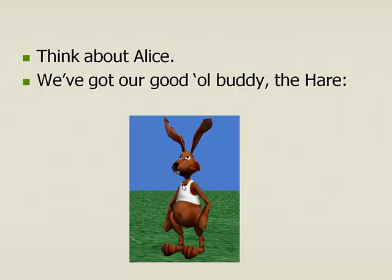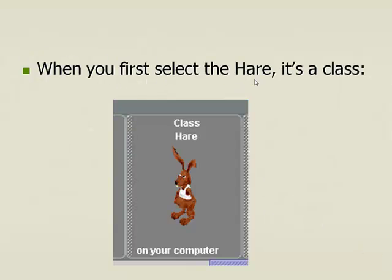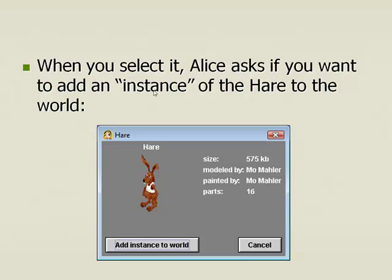Let's think about Alice, and our good old buddy the Hare from Alice. When you first select the Hare in Alice, it says Class — because this is the blueprint for the Hare. It's not an actual object of a Hare, it's the blueprint for the Hare. It's the class. When you select it, Alice asks if you want to add an instance of the Hare to the world. A window comes up and says 'add instance to the world.' When you click that, it adds an instance to the world — it adds a Hare object. It doesn't add the class; it adds an instance of the class to the world.